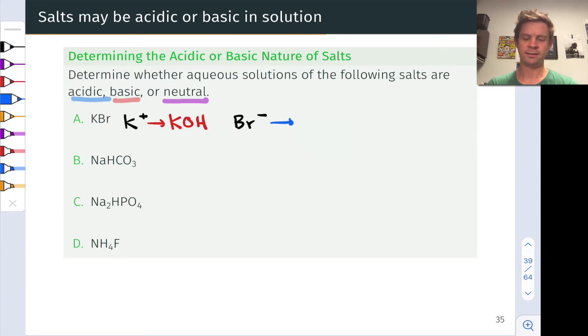Br minus is the conjugate base of HBr. That's a strong acid, right? So Br minus, likewise being the conjugate base of a strong acid, will not react with water to any appreciable degree. This makes KBr a neutral salt overall. When dissolved in water it will give solutions with a neutral pH, pH 7.